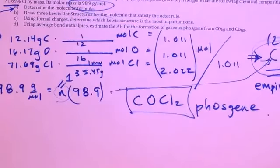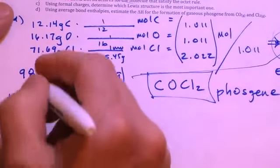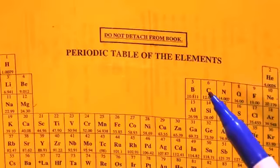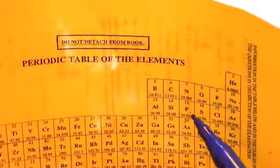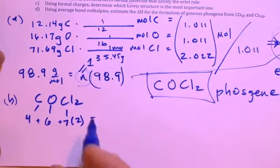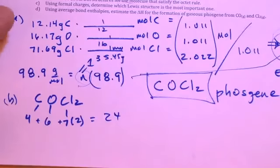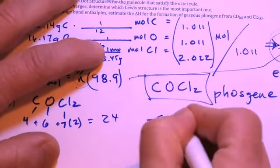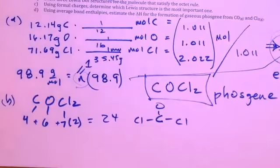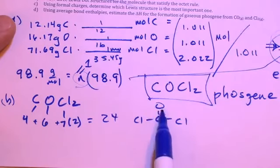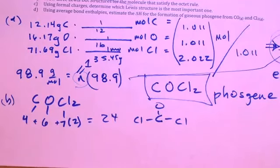Part B asks us to draw the Lewis electron dot structure for phosgene that satisfies the octet rule. We have carbon, oxygen, and 2 chlorines. Carbon has 4 valence electrons (Group 14), oxygen has 6, and each chlorine has 7, so 7×2 = 14. Total valence electrons: 4 + 6 + 14 = 24. Take the least electronegative atom — carbon — and put it in the middle. Bond a chlorine on each side and the oxygen to the carbon. Checking electron counts: with all single bonds, carbon would not have a complete octet.